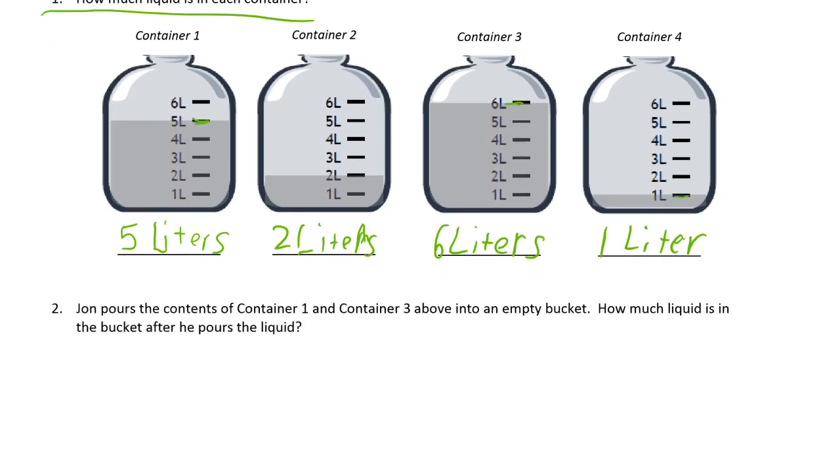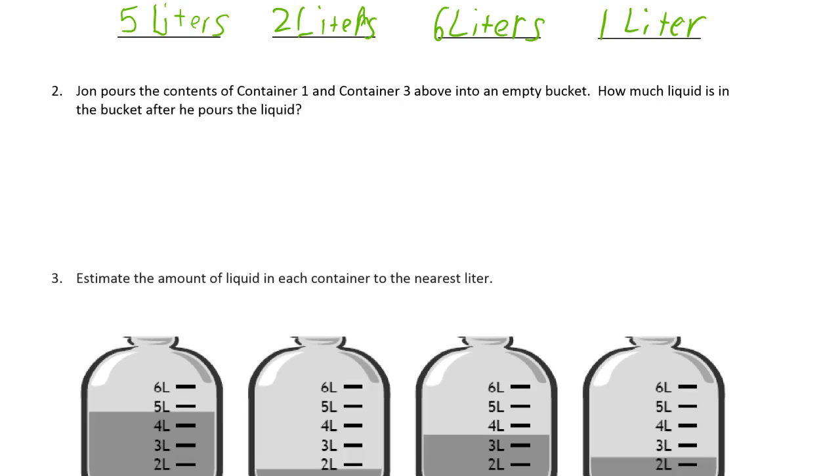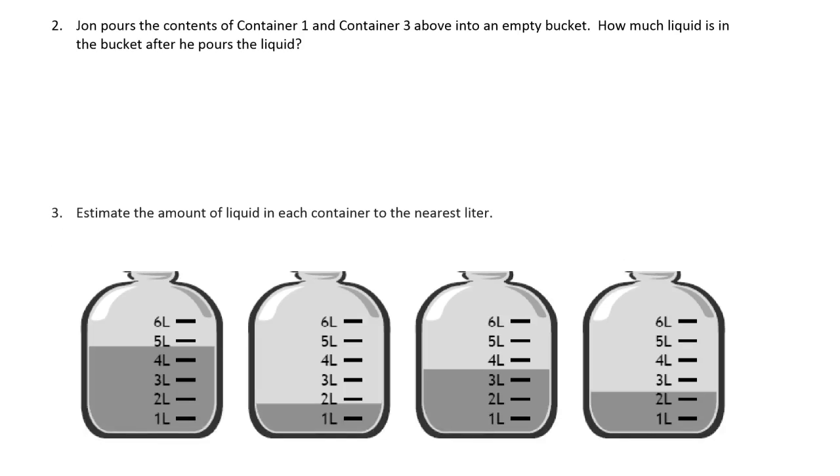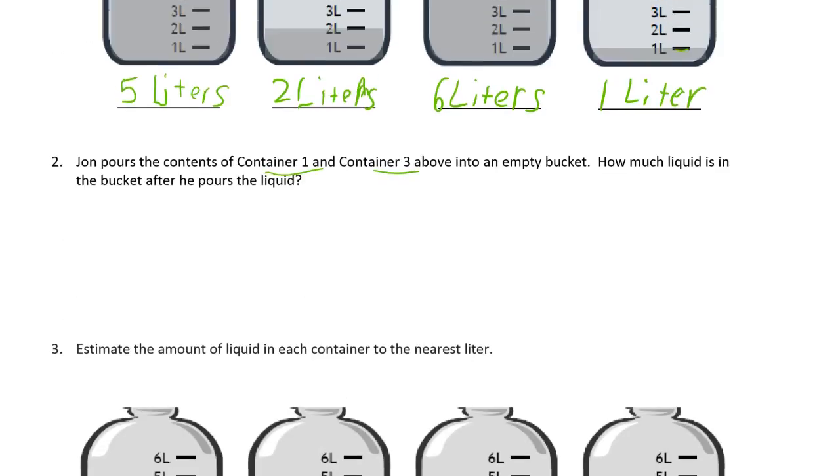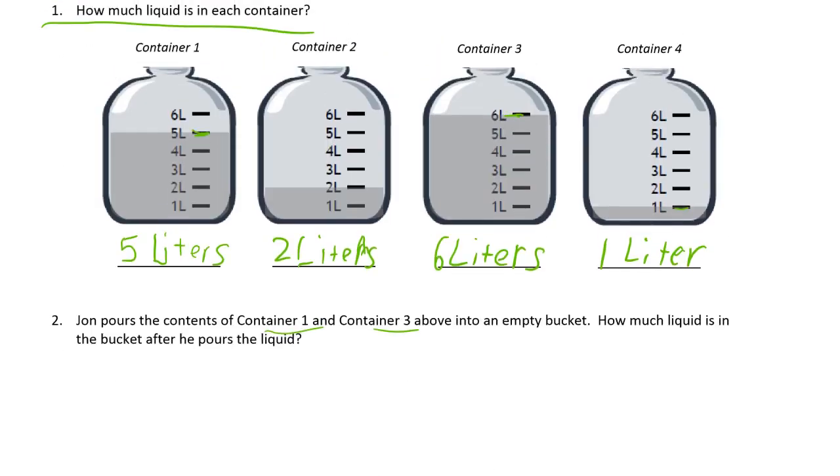Number two: Jon pours the contents of container 1 and container 3 above into an empty bucket. How much liquid is in the bucket after he pours the liquid? So container 1 is that one there and container 3 is that one there, and he's going to combine the contents by pouring them both into the same empty bucket.